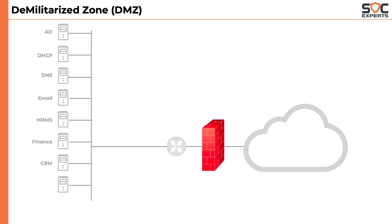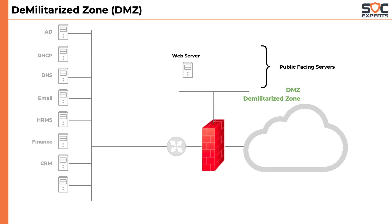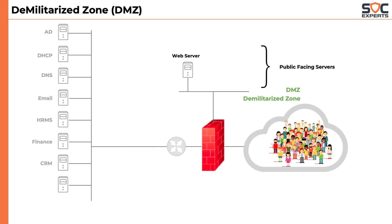Next, we will learn about a concept called DMZ, which stands for Demilitarized Zone. DMZ is a segment of the firewall where a company's public-facing servers are kept. Public-facing servers means the servers that are exposed to customers on the internet. For the company Amazon, it is their web server — anybody in the world can access their web server and order items. Other examples of public-facing servers include email servers or FTP servers, where customers can upload documents or pictures.